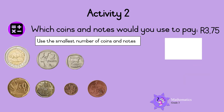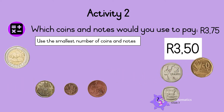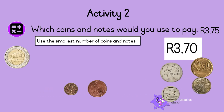What about this one? Which coins and notes would you use to pay 3 Rand 75 cents? You will need a 2 Rand coin and a 1 Rand coin. We now have 3 Rand. We still need 75 cents. So, we need a 50 Cent coin, a 20 Cent coin, and a 5 Cent coin. Excellent!